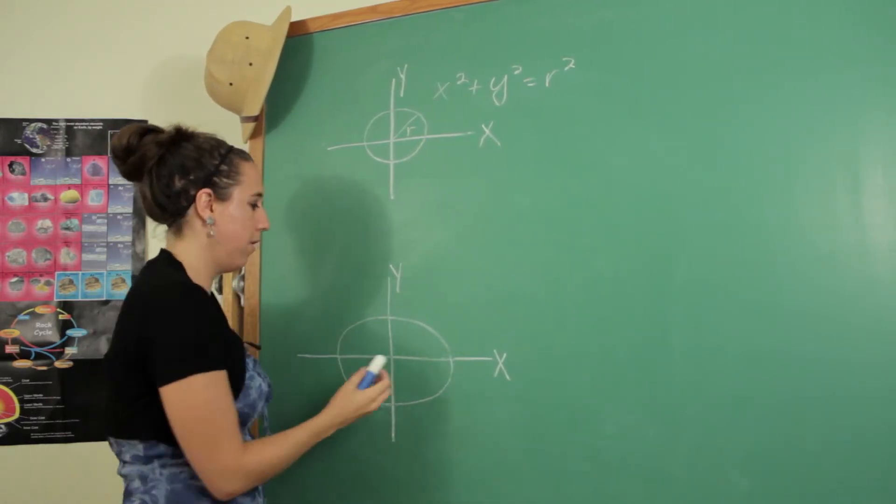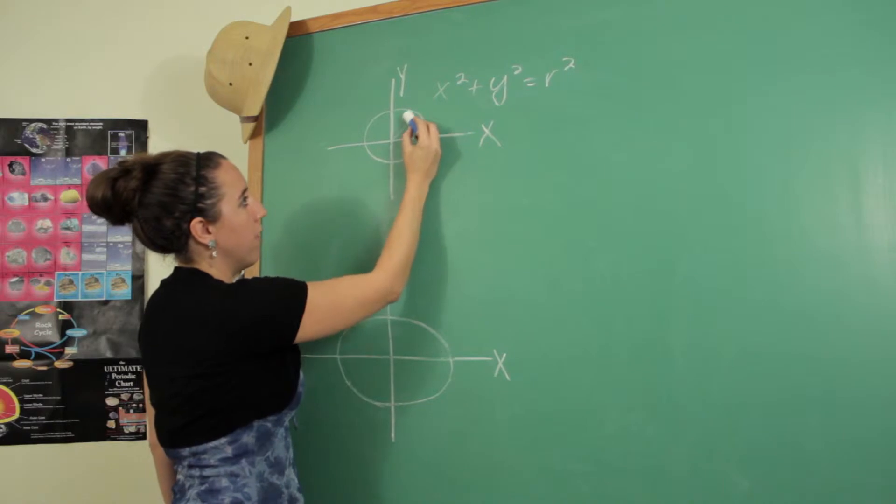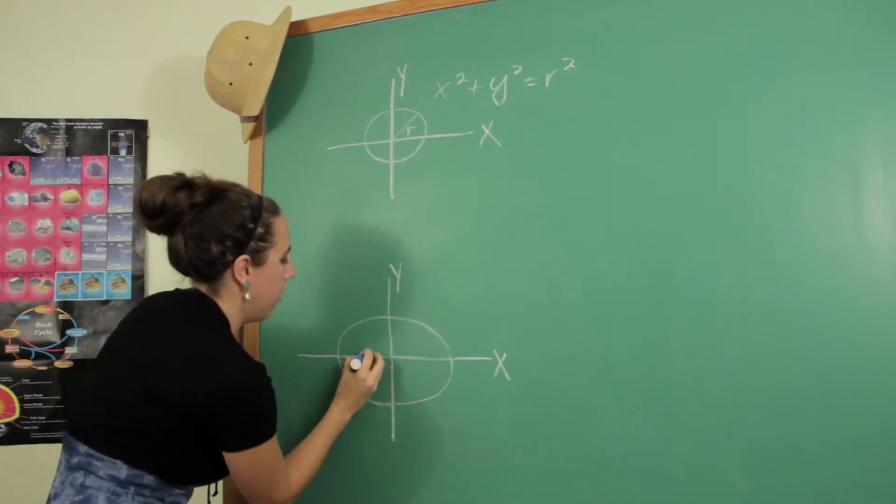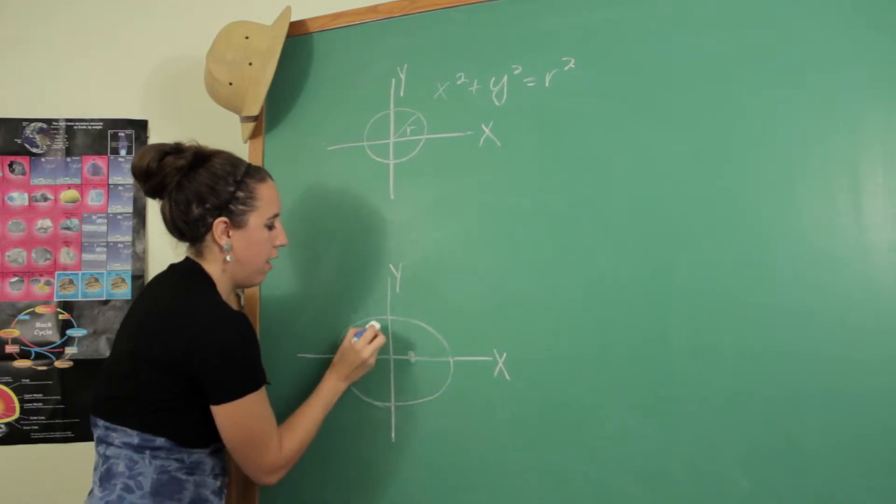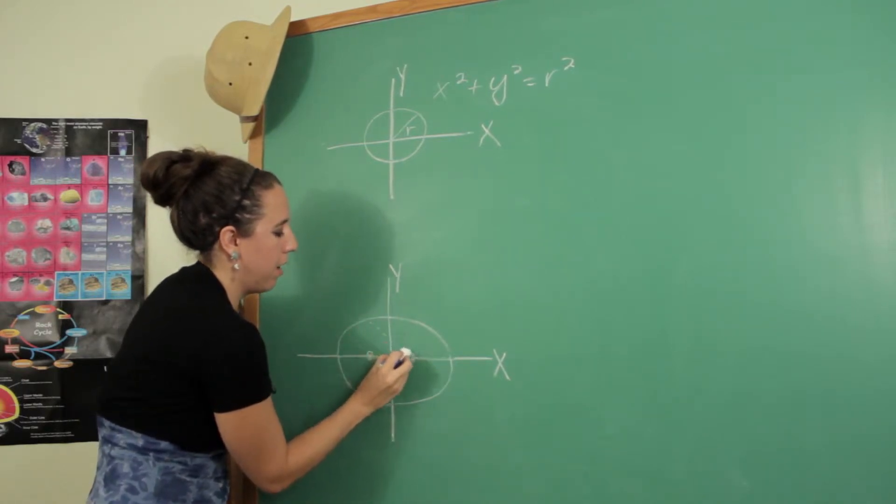But for our ellipse, instead of this distance, we're going to define it through the focal points and their combined distance.